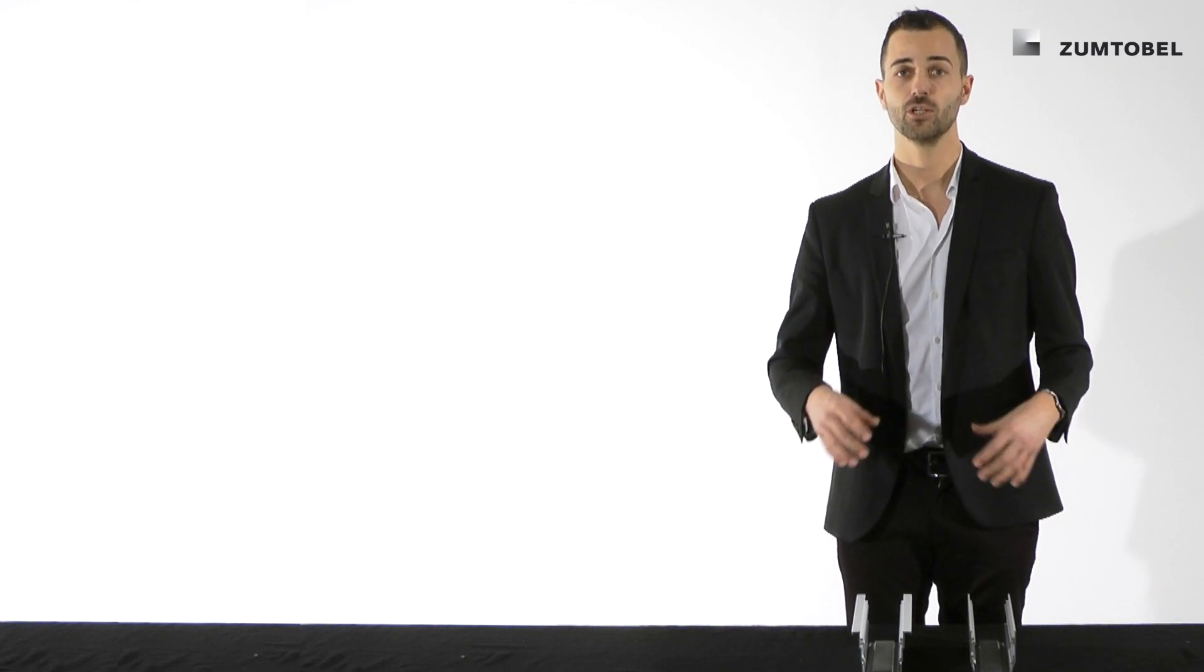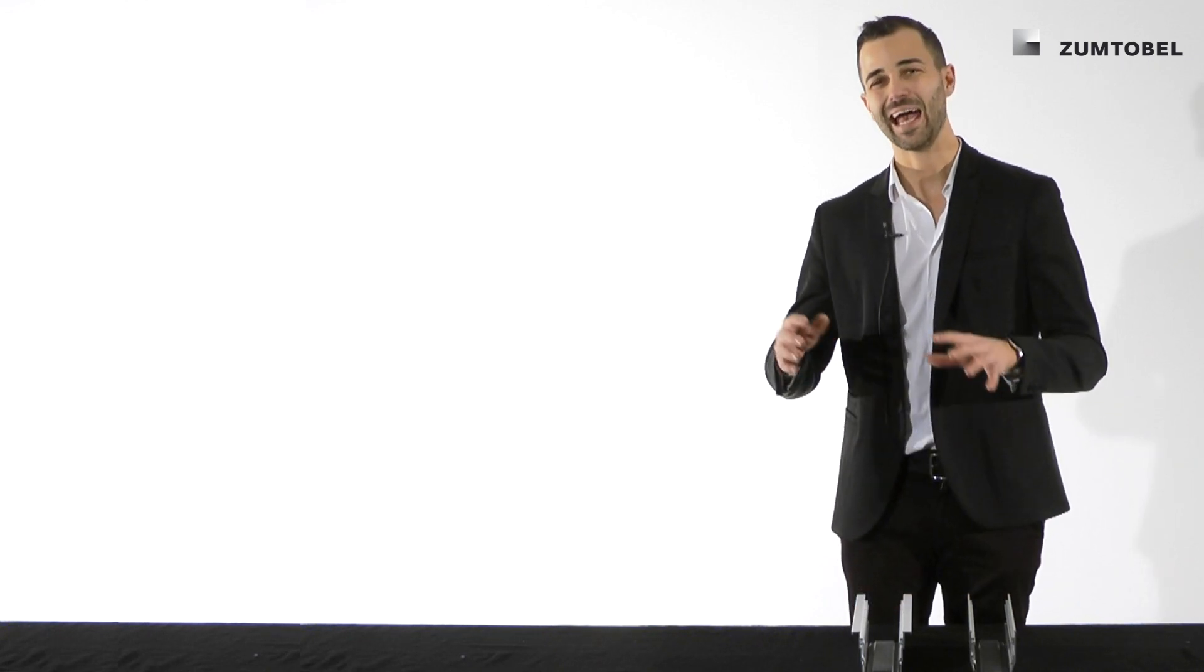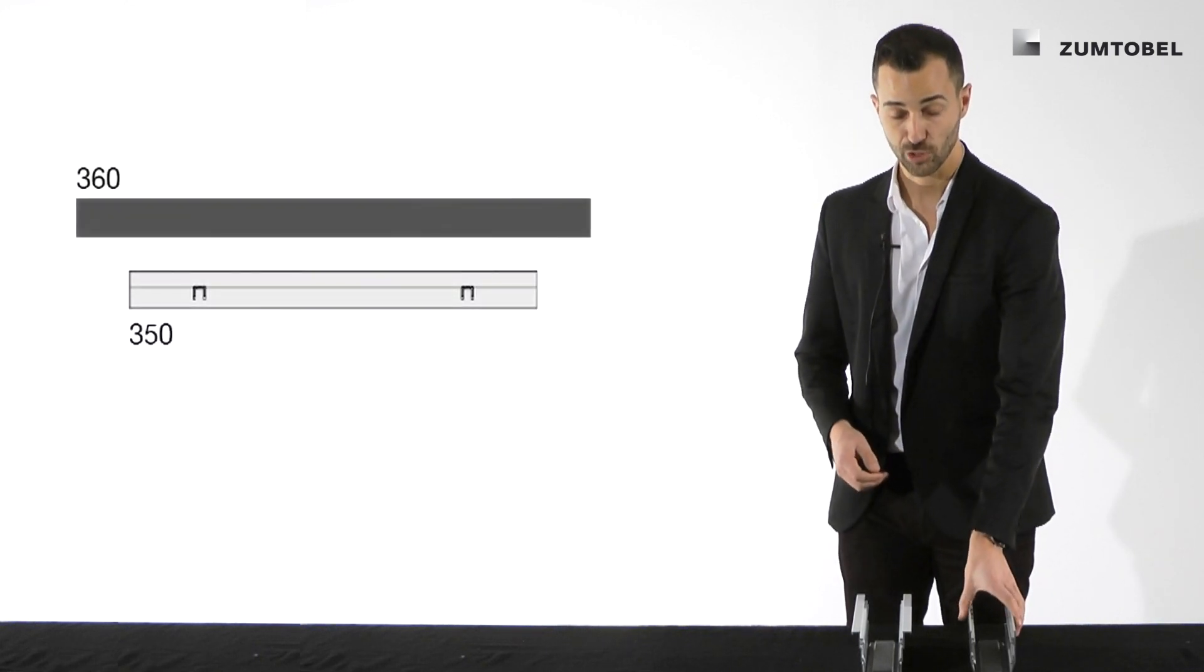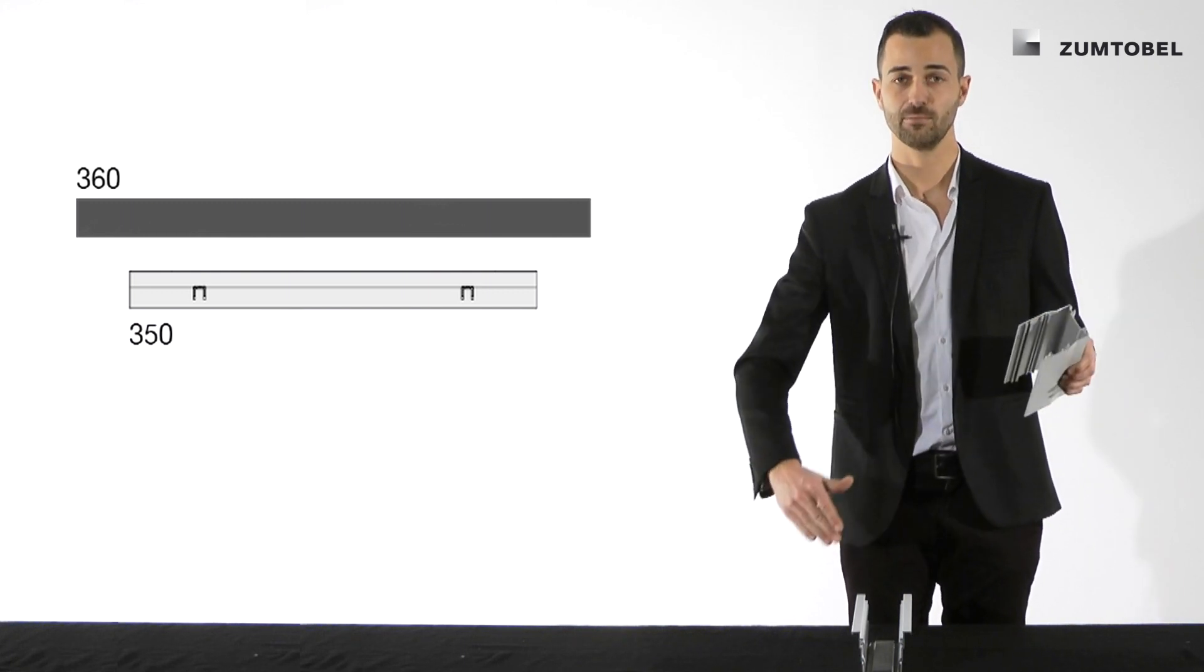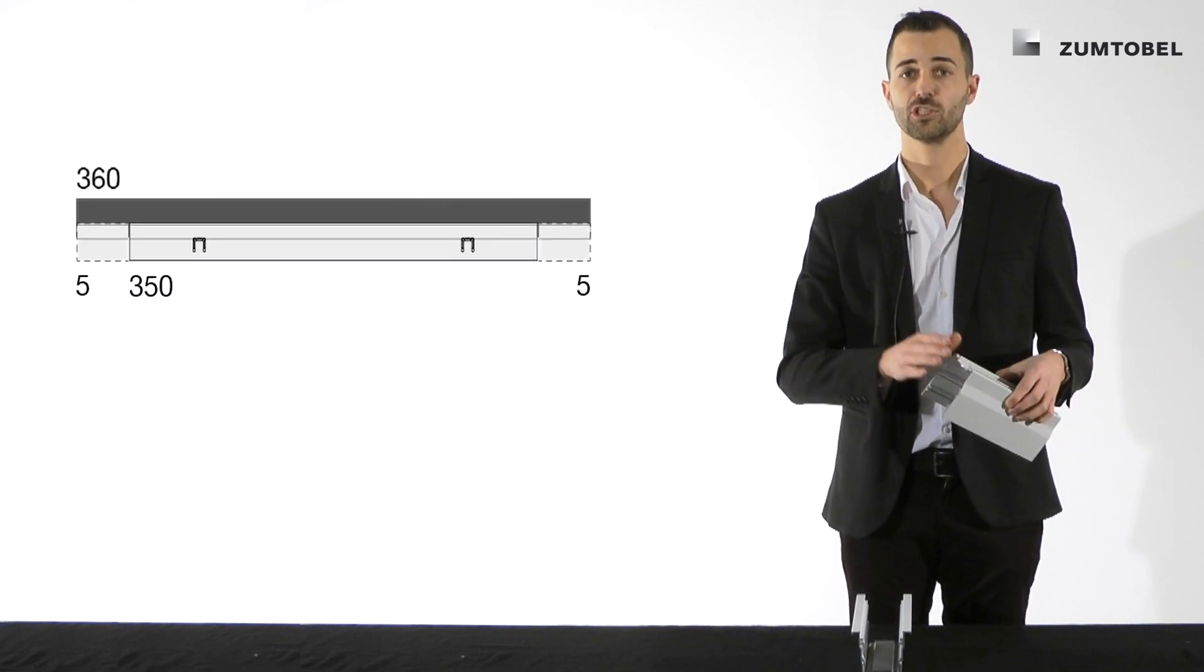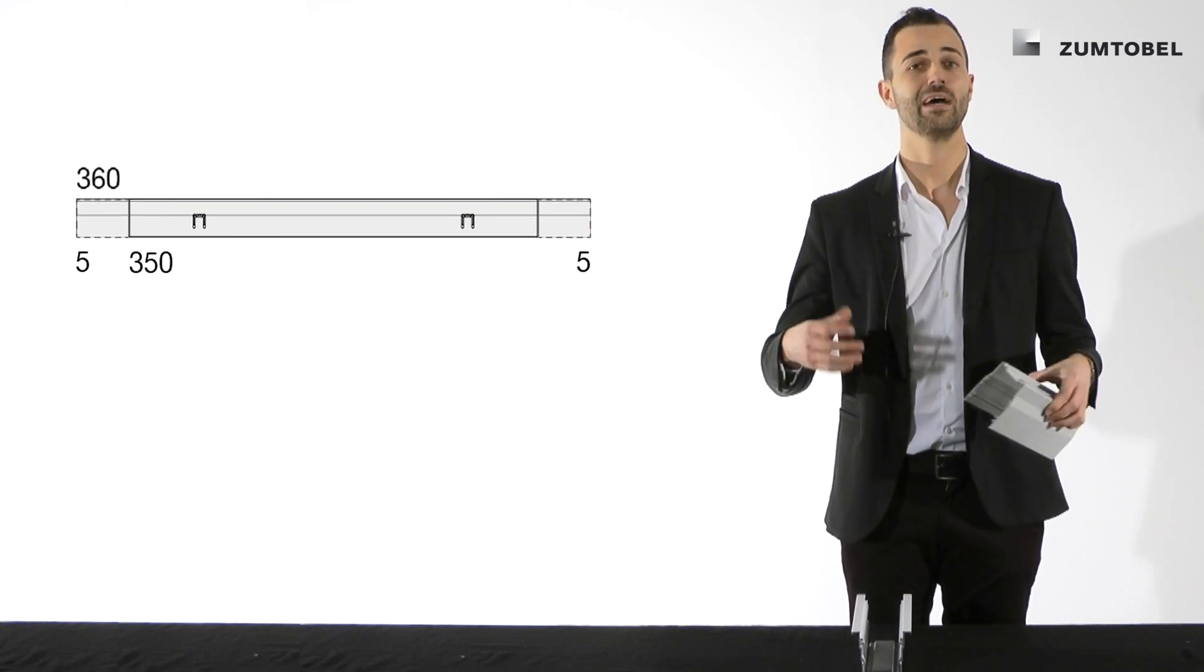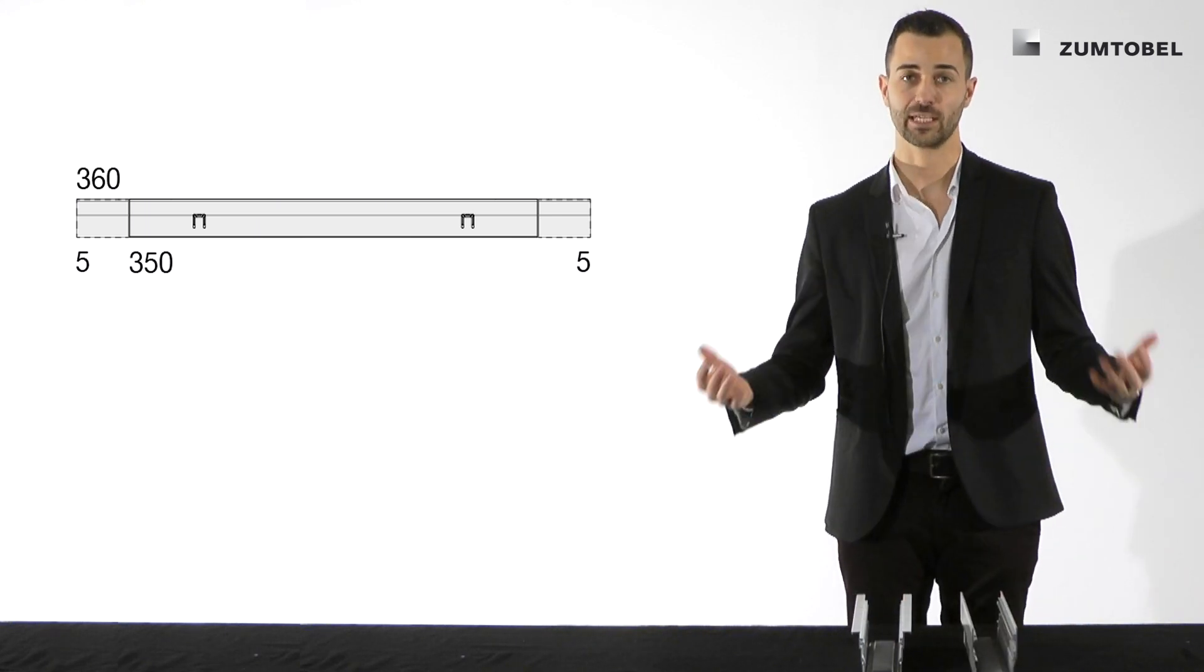This means you can use only standard materials and no special channel and no special LED baton, and you can configure down to every millimeter you really need. For the surface mounted suspended and for the technical, it's not as easy, but it's similar. You take the 3.50m in the example for the surface mounted, and then you take the channel to cut. You cut the 5cm two times, and with the connection set of Slotlight Infinity, you just connect it on each side, and so you have your 3.60m, also for the surface mounted suspended, and also for the technical channel. You only use standard components.